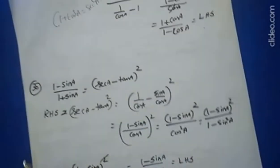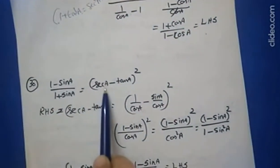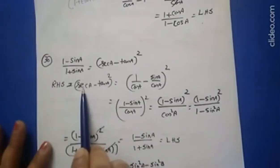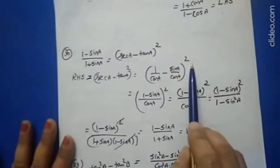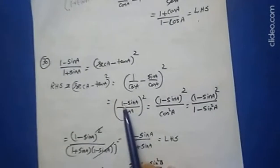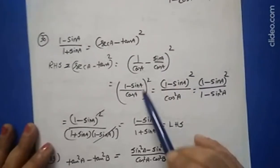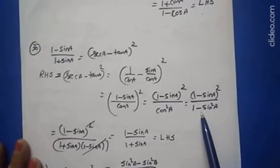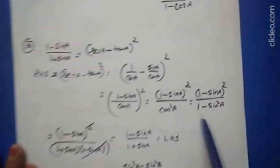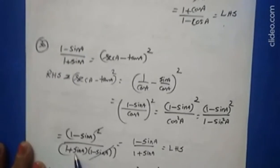Question 30 is a similar question with only a little difference. Work with (sec a − tan a)²: replace sec a with 1/cos a and tan a with sin a/cos a. Take LCM inside to get ((1 − sin a)/cos a)². Separate the power: (1 − sin a)²/cos²a. Write cos²a = 1 − sin²a = (1 + sin a)(1 − sin a). Cancel one (1 − sin a), giving (1 − sin a)/(1 + sin a), which is the right hand side.